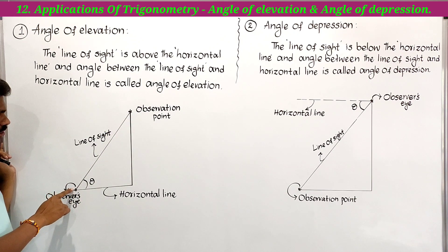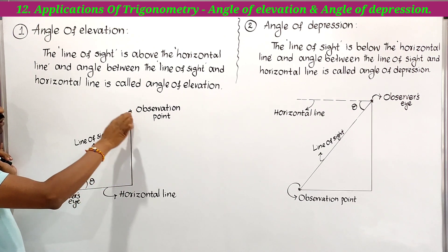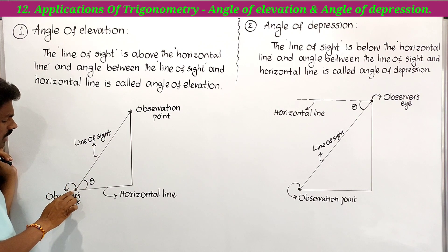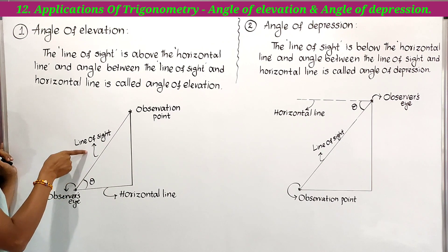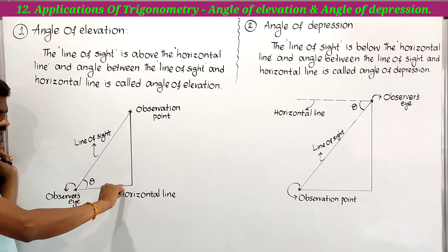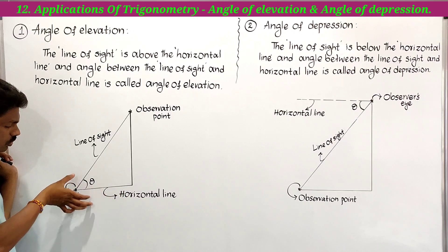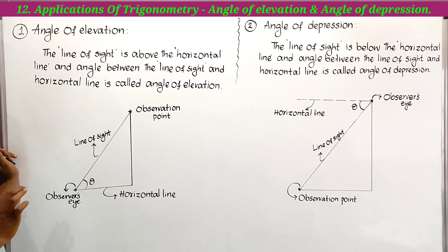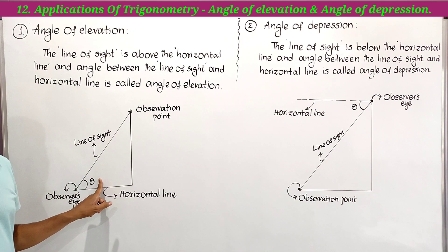So this is the observation point — this is the observer's eye. We draw a tree or a building. We look at the top edge point of that object. The angle formed between the line of sight and the horizontal line is called the angle of elevation.